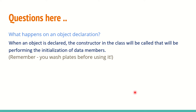What happens on an object declaration? When an object is declared, it calls the corresponding constructor. The constructor loads the default values set for that constructor and initializes the data members of the object — it is like washing the plate before putting food into it.